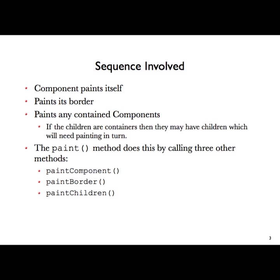There's a little sequence dealt with by three methods. If you think about paint as a method on an abstract class called component, you have to say how each of these things is dealt with. What happens is: you just paint the component to draw itself, it then draws any border that it has — we were using coloured borders — and then it cycles round with a little loop in the paintChildren method, which looks at all the things contained within it and calls paint on each of those.